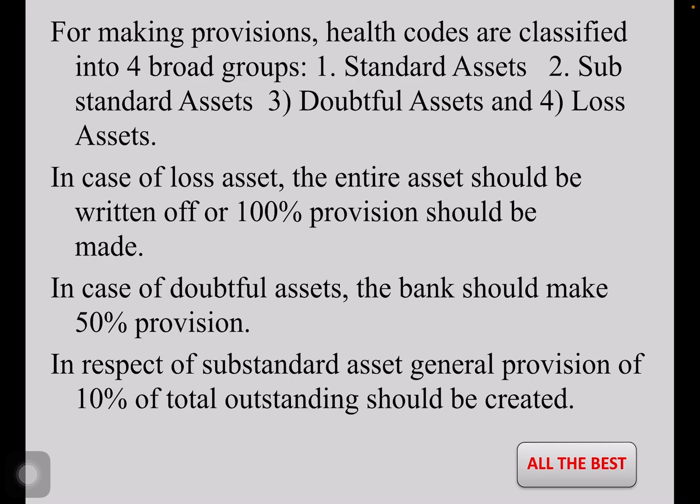In case of loss assets, the entire asset should be written off or 100 percent provision should be made. That means, if it is a loss asset — it has crossed 180 days and the bank did not receive the principal amount or the interest — it should not be shown in the balance sheet. If at all they have to show it, 100 percent provision should be made as a reserve. In case of doubtful assets, the bank should make 50 percent provision. In respect of substandard assets, a general provision of 10 percent of total outstanding should be created.